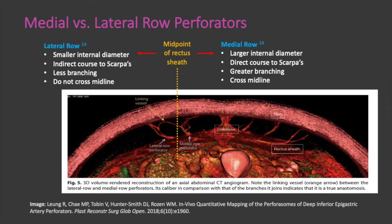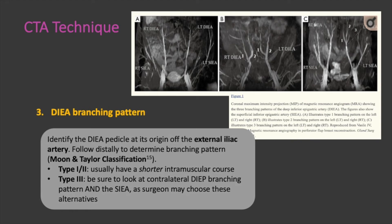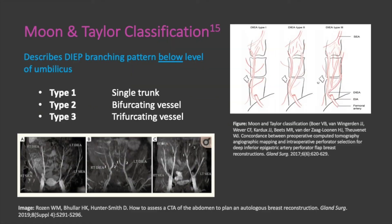Next, it is important to identify the DIEA pedicle at its origin off the external iliac artery. The artery should be followed distally to determine its branching pattern, which can be classified according to the Moon and Taylor classification. Type 1 and 2 vessels usually have shorter intramuscular courses and are therefore favorable, while type 3 vessels are unfavorable, and attention should be given to the contralateral deep in case the branching pattern is more favorable. The DIEA has classically been described as having three distinct branching patterns, distributing five to six major perforators to the muscle and overlying subcutaneous tissues. Type 1 has a single trunk, type 2 has a bifurcating vessel, and type 3 has a trifurcating vessel. This branching pattern is specifically described below the level of the umbilicus.